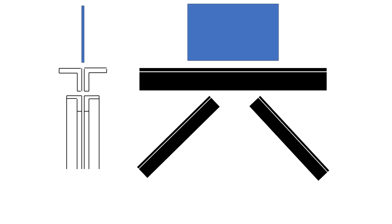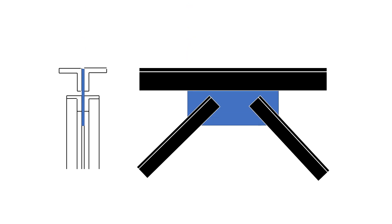In bolted trusses, double angle sections are frequently used for both chord and web members. This design facilitates the connection of members meeting at a joint by permitting the use of a single gusset plate on which the chords and the webs will be bolted.